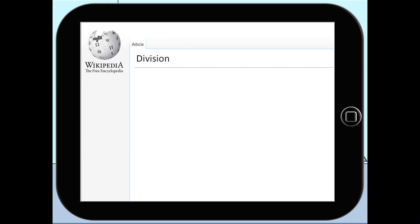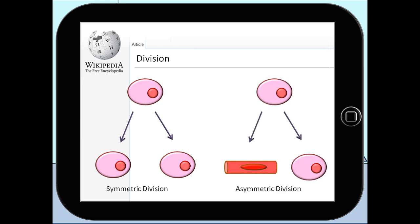Stem cells divide either by symmetric division where they duplicate the number of stem cells or by asymmetric division where one normal stem cell and one differentiated stem cell is produced. Stem cells keep amplifying themselves by self-renewal to expand their number during development or to maintain their number in the body after cell injury.